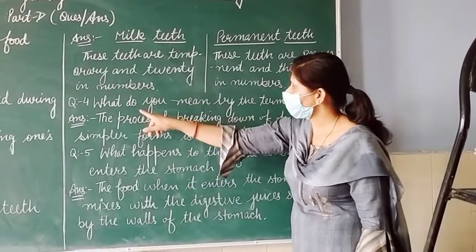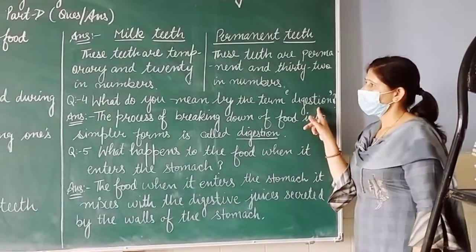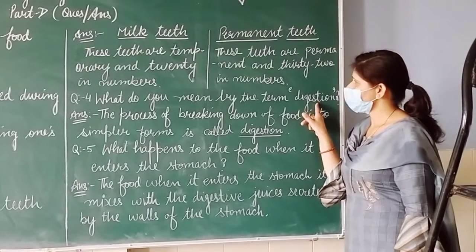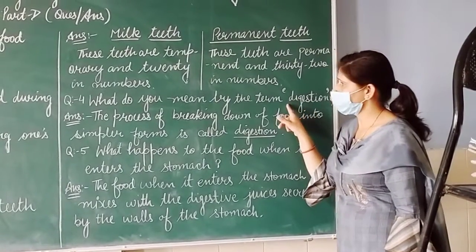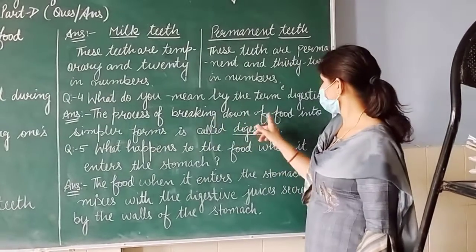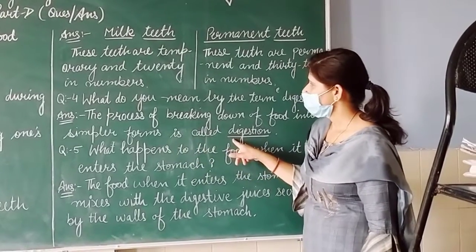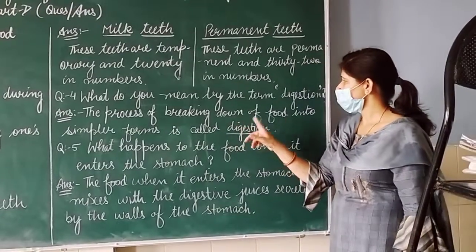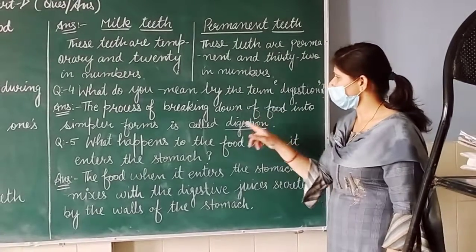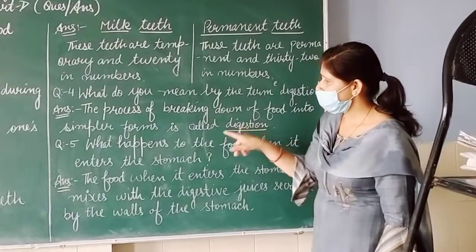Question number 4: what do you mean by the term digestion? Digestion jo term hai, yeh ek process hai — woha aapne explain karna hai. The answer is: the process of breaking down of food into simpler forms is called digestion. Aisi process jis mein khana breakdown ho jata hai simpler form mein, usko bolte hain digestion.